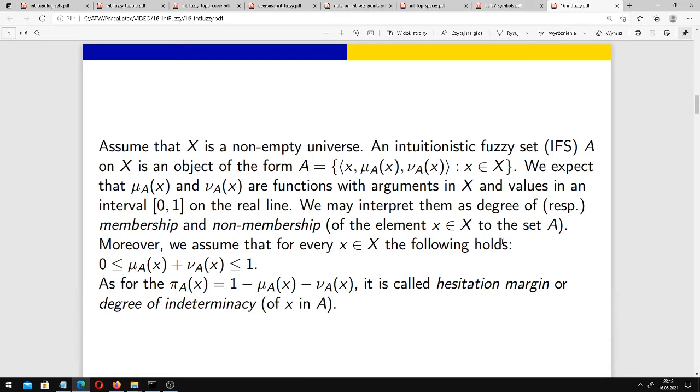As I said, they may be interpreted as a degree of membership and non-membership. Moreover, we have 1 minus μ_A(x) minus ν_A(x), and this is called the hesitation margin or degree of indeterminacy.